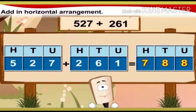Next sum: 527 plus 261. 527 means 5 hundreds, 2 tens, and 7 units. Plus 261 means 2 hundreds, 6 tens, and 1 unit. Begin addition from the units side: 7 units plus 1 unit is 8, write 8 in the units column. 2 tens plus 6 tens is 8, write 8 in the tens column. 5 hundreds plus 2 hundreds is 700, write 7 in the hundreds column. The answer is 788.